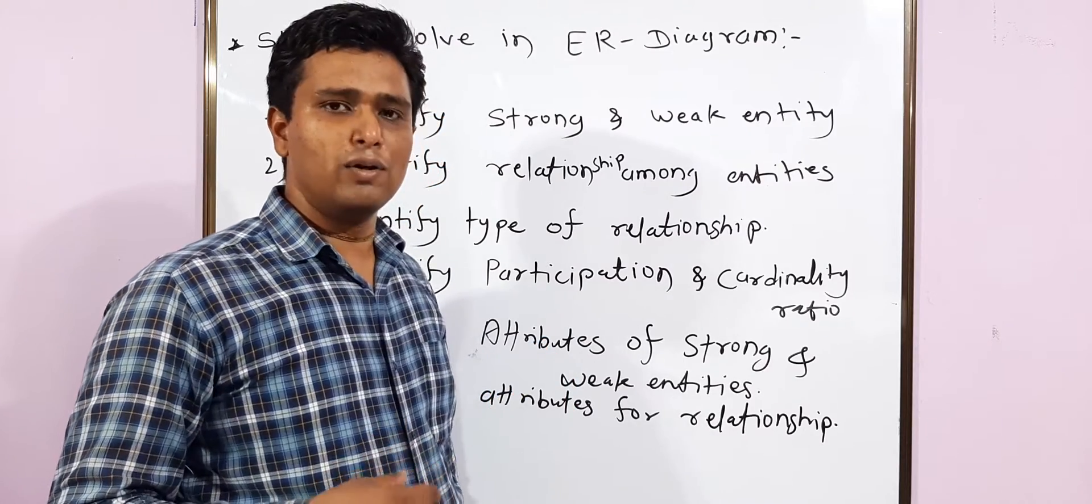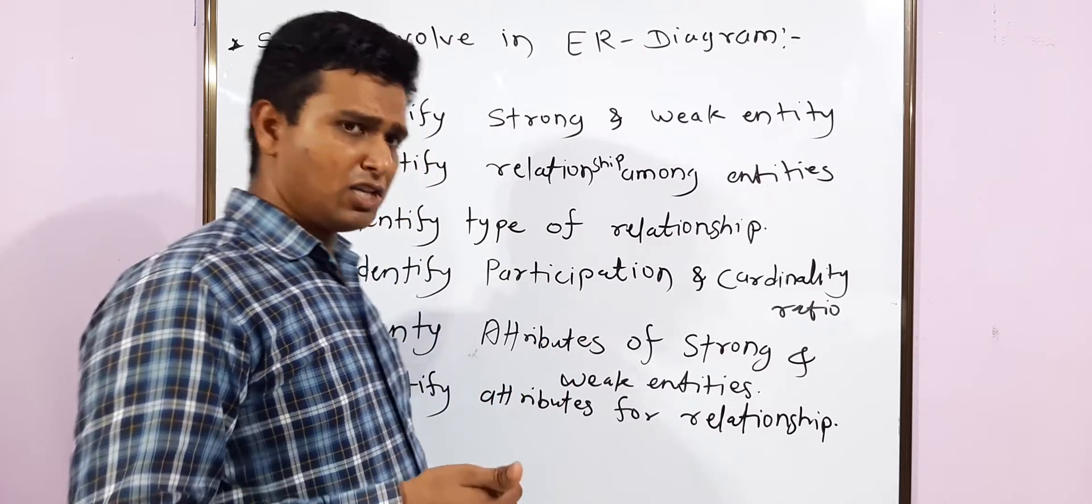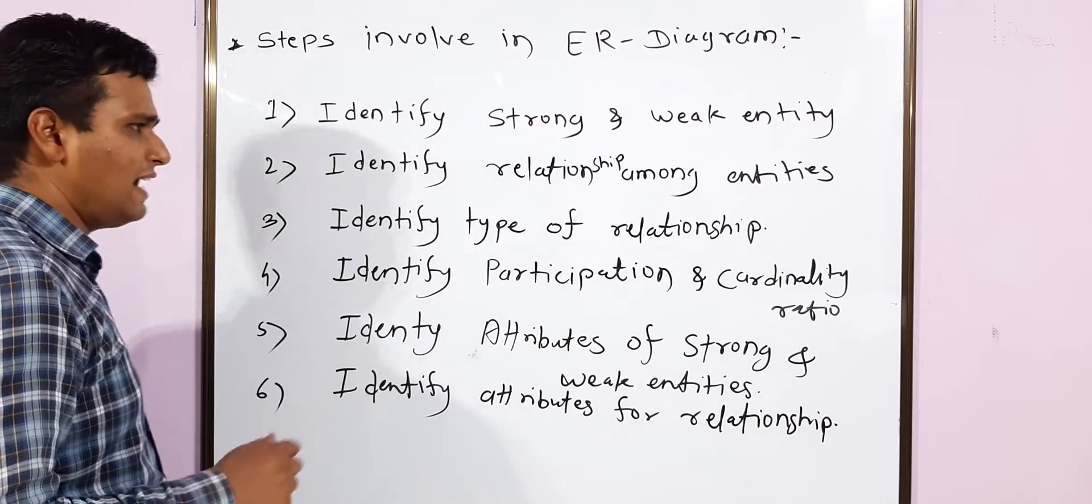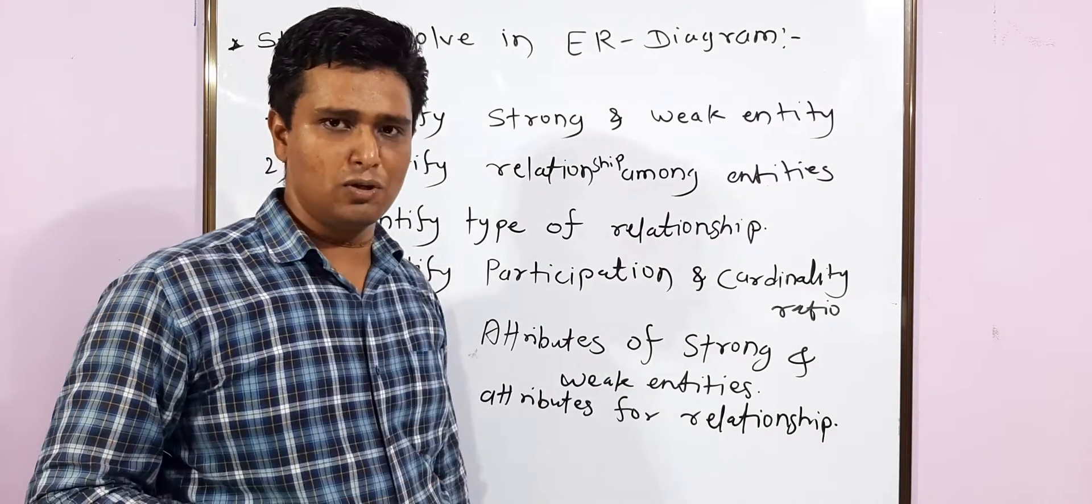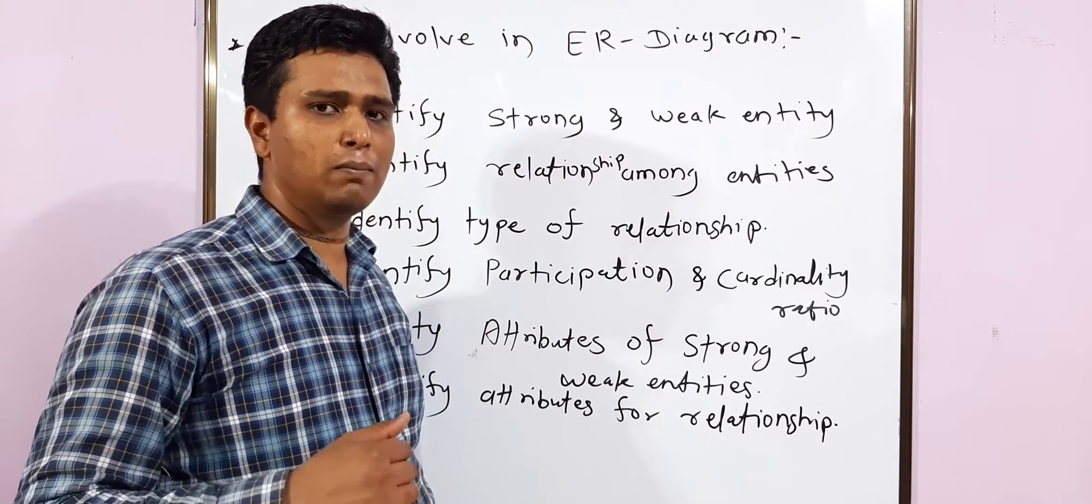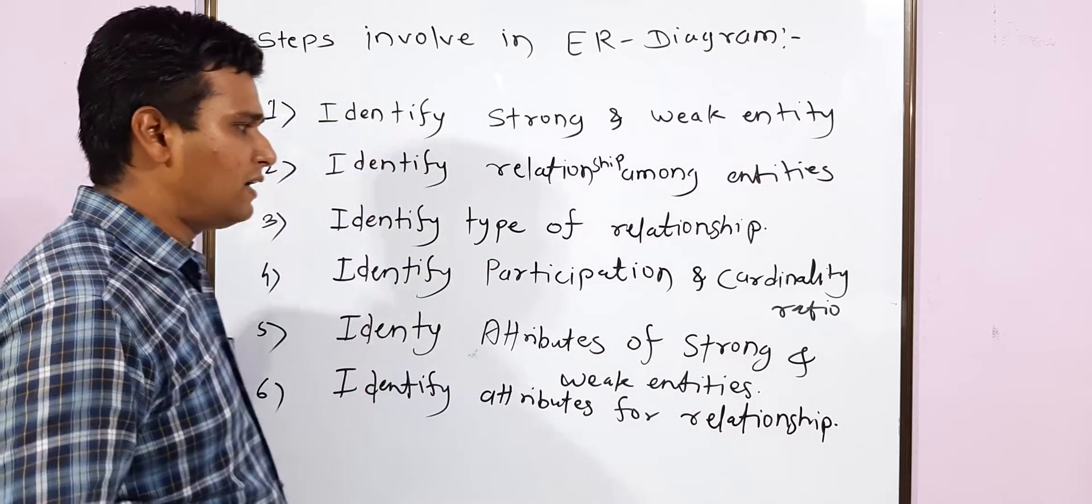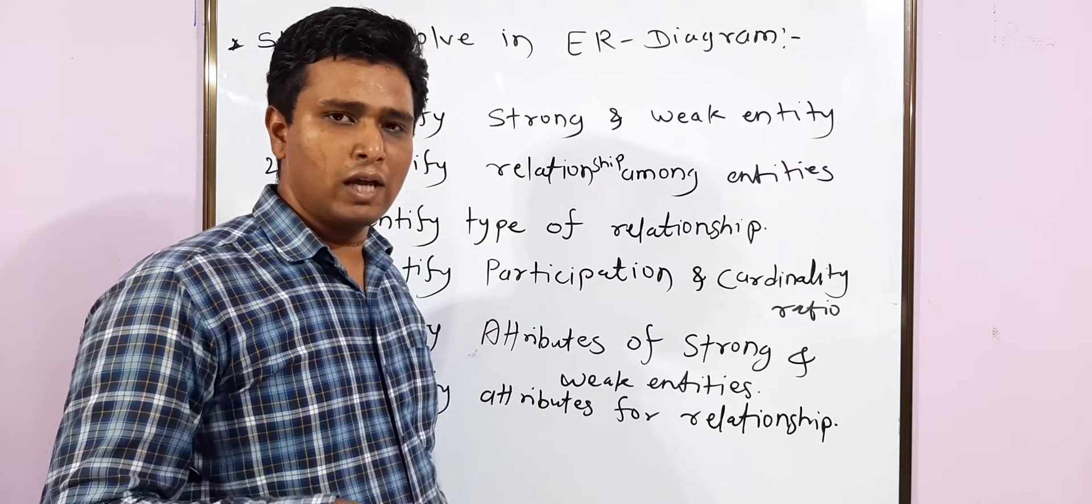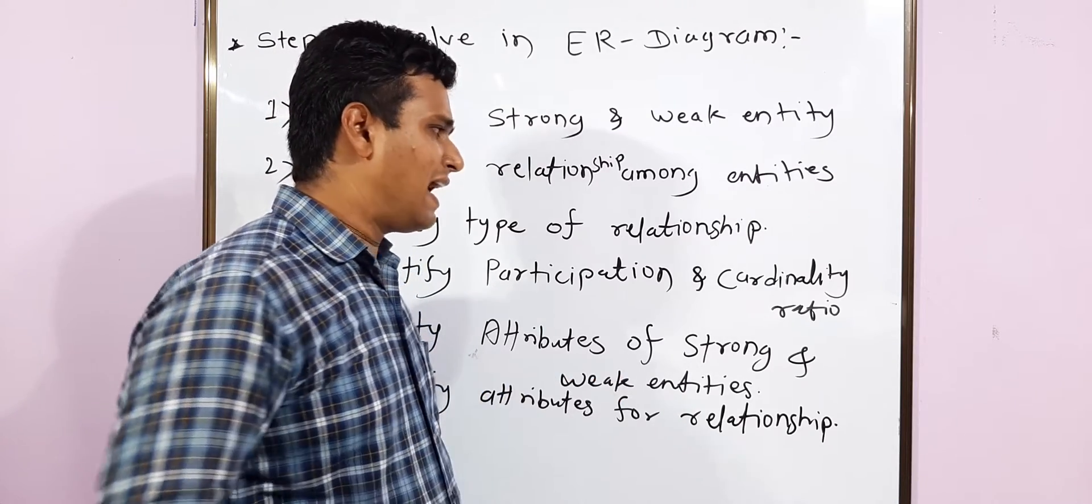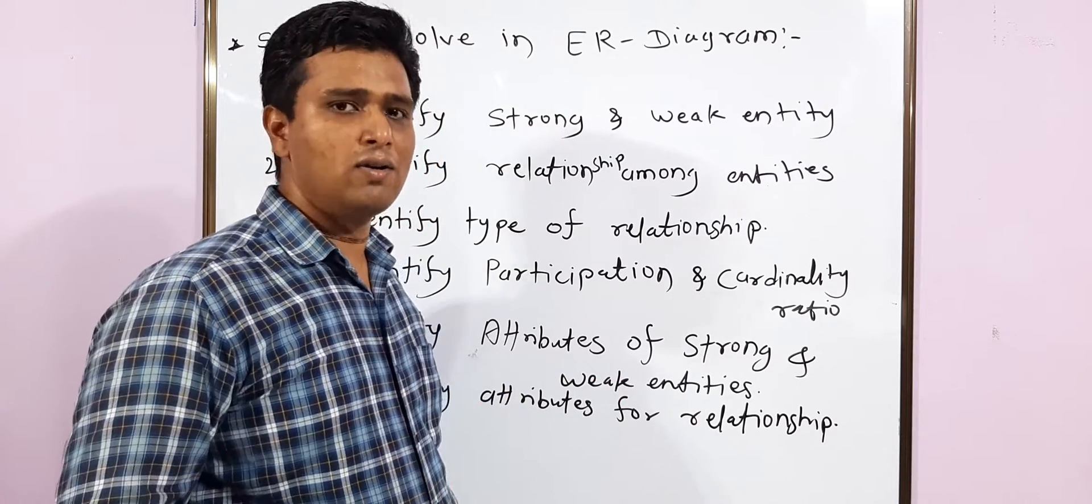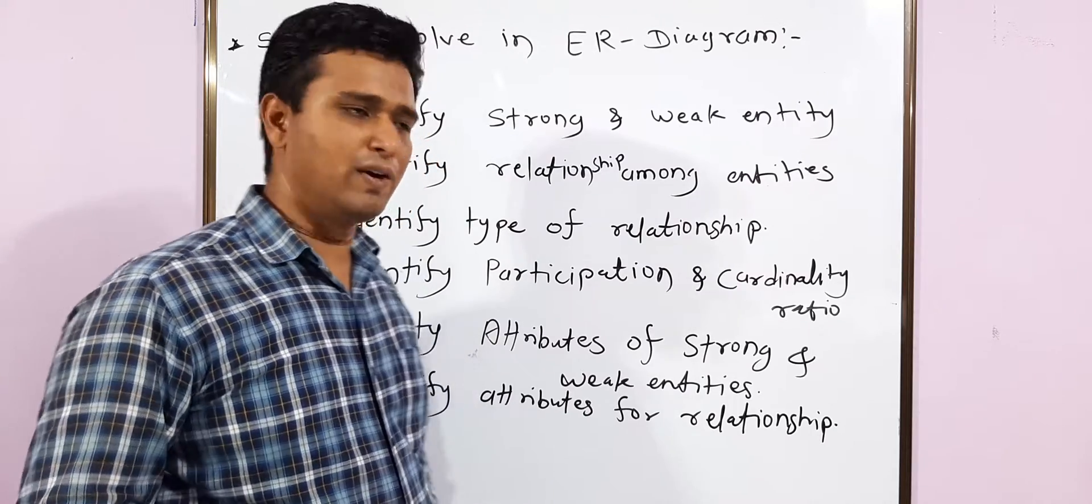We have discussed how to find out the relationship and what are the different relationships that are possible. Third is identify types of relationships, whether it is unary, binary, or ternary. Identify the participation: many-to-many, one-to-many, many-to-one, as well as cardinality. We have discussed this in our previous videos.